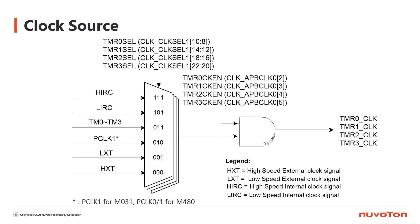As we mentioned before, we have to set the clock source for each timer. Here shows all the clock sources we can use for a timer. There are six clock sources for M031 and M032. HIRC and LIRC are high-speed and low-speed internal clocks. HXT and LXT are high-speed and low-speed external clocks. PCLK1 is the peripheral clock. TM0 to TM3 are the input pins for external clocks. You can set the clock source of each timer individually by setting the register TMRX_SEL. Besides, you can enable the clock of a timer by setting the register TMRX_CKEN. Therefore, after selecting the clock source and enabling the clock, the clock of the timer starts to work, which means that the clock is ready to be used by the timer.